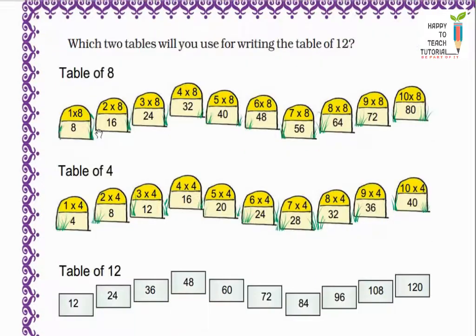Let's see table of 8: 8×1=8, 8×2=16, 8×3=24, 8×4=32, 8×5=40, 8×6=48, 8×7=56, 8×8=64, 8×9=72, 8×10=80. Similarly write the table of 4: 4×1=4, 4×2=8, 4×3=12, 4×4=16, 4×5=20, 4×6=24, 4×7=28, 4×8=32, 4×9=36, 4×10=40. Now we will add these two numbers from the yellow boxes. So 8+4=12, 16+8=24, 24+12=36, 32+16=48, 40+20=60, 48+24=72, 56+28=84, 64+32=96, 72+36=108, and 80+40=120. So this way we can write the table of 12.